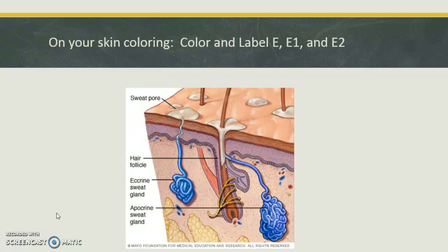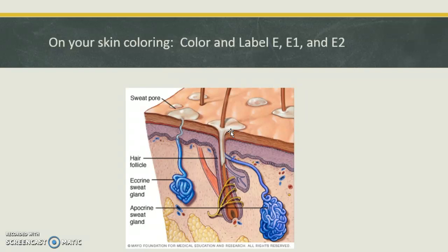Comparing the two: ecrine glands have a coiled mass in the dermis that extends up through a pore in the skin, used for cooling purposes. Apocrine glands, found in armpits and groins, also have a coiled mass in the dermis, but the tube leads to a hair shaft. The sweat is metabolized by bacteria in those regions, creating the smell. On your coloring sheet, please label and color E, E1, and E2, pausing the video while you do so.